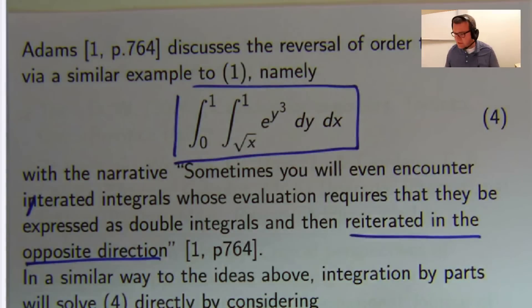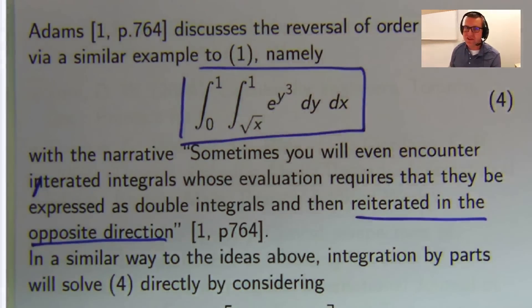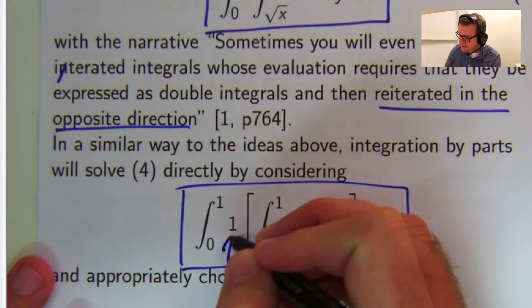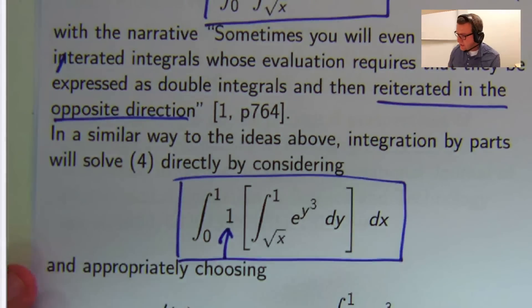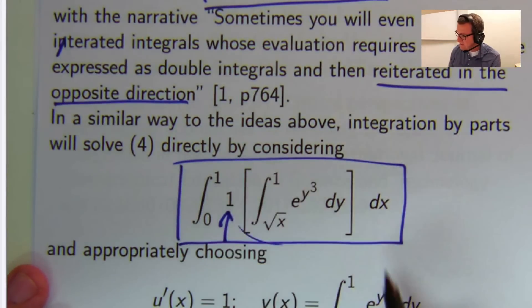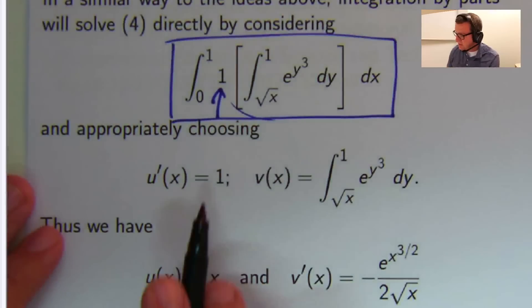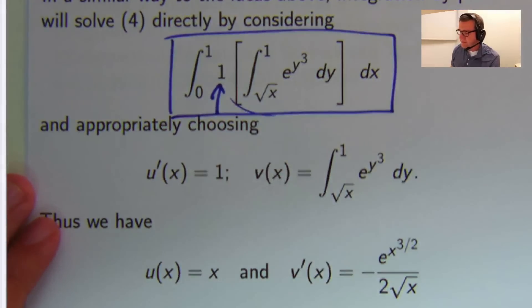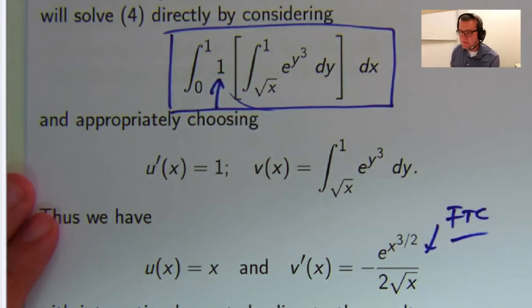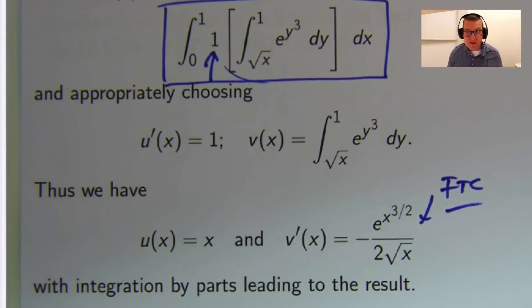So similar to what we've done, we're not going to reverse the order of integration. We're going to insert a factor of 1, right here. We're going to let this be u, this square bracket inside be v, and compute u and v'. Here again, we've used the fundamental theorem of calculus. If you apply integration by parts, you get the result.